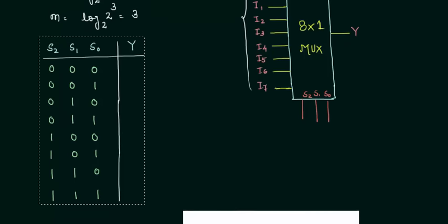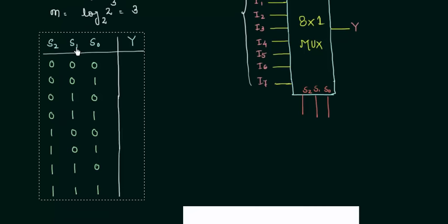There are s2, s1 and s0, 3 select lines and as there are 3 select lines we are having 8 possible combinations. The next important thing is to determine the value of the output or how it multiplexes depending upon s1, s2 and s0.